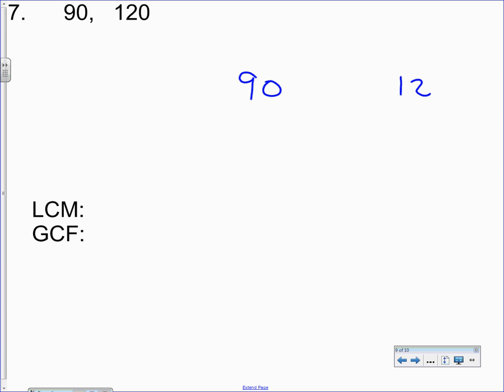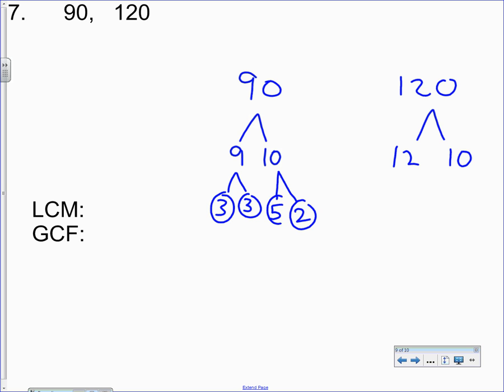Example seven from yesterday's worksheet. 90 and 120, both divisible by 10. They both end in a zero. 9 times 10 and 12 times 10. You have to keep breaking down the numbers until you get to prime numbers. Once you get to a prime number, circle it so you know you're done.